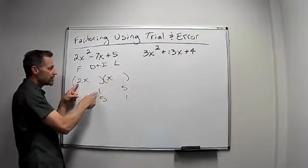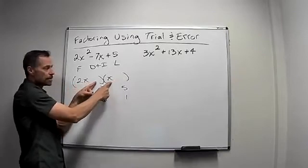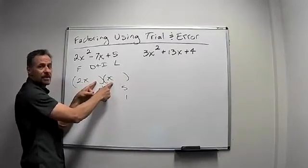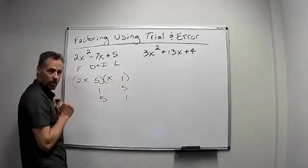But if I put the 1 here and the 5 here, I'm going to get 2 times 1 is 2. 5 times 1 is 5. 5 plus 2 is 7. So it has to be the second one. It has to be a 5 and a 1.